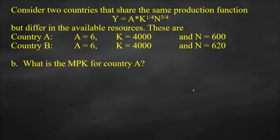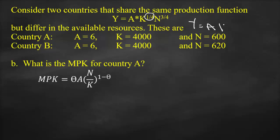The second part of the question asks for the marginal product of capital for Country A. To calculate MPK, we use the formula: MPK = θ × A × (N/K)^(1-θ), where θ is always the power of K. Our general production function is Y = A × K^θ × N^(1-θ), so θ = 1/4 = 0.25.